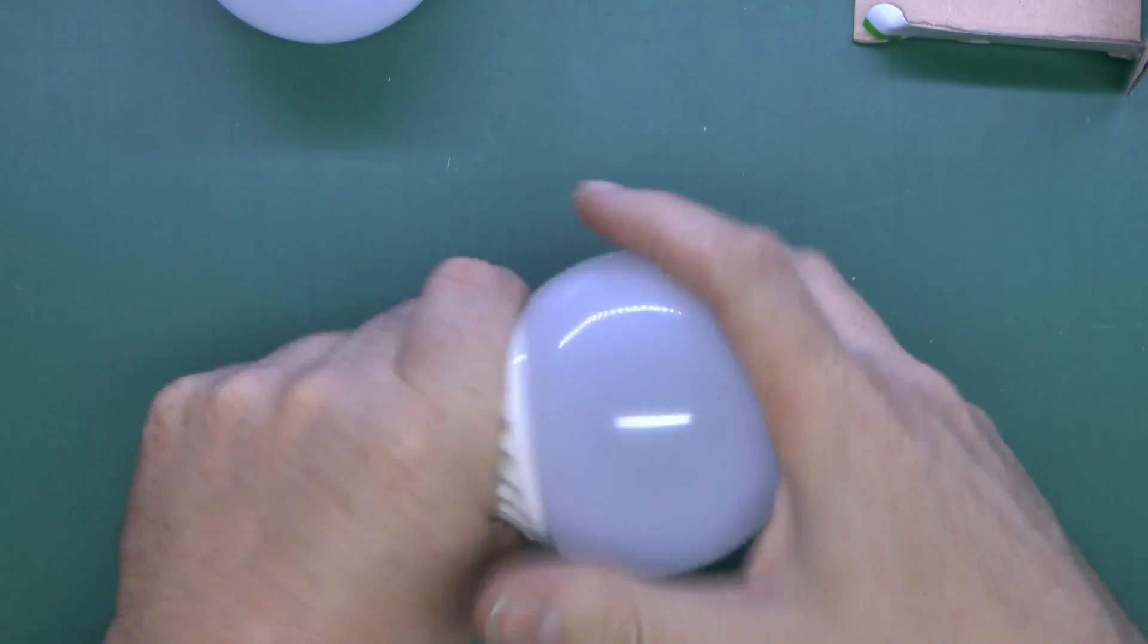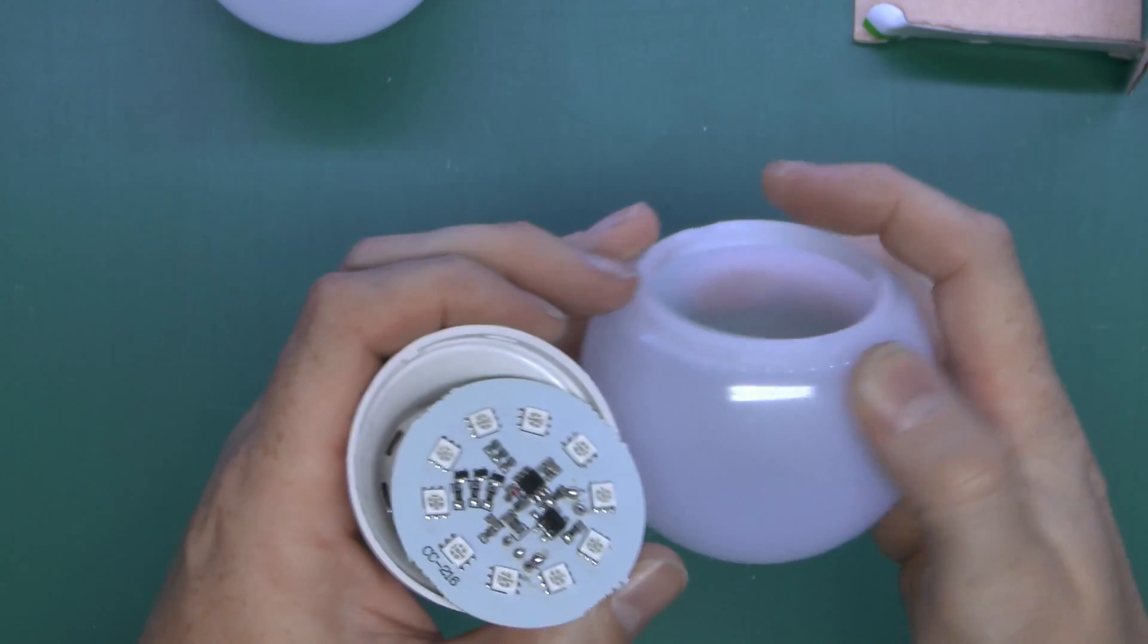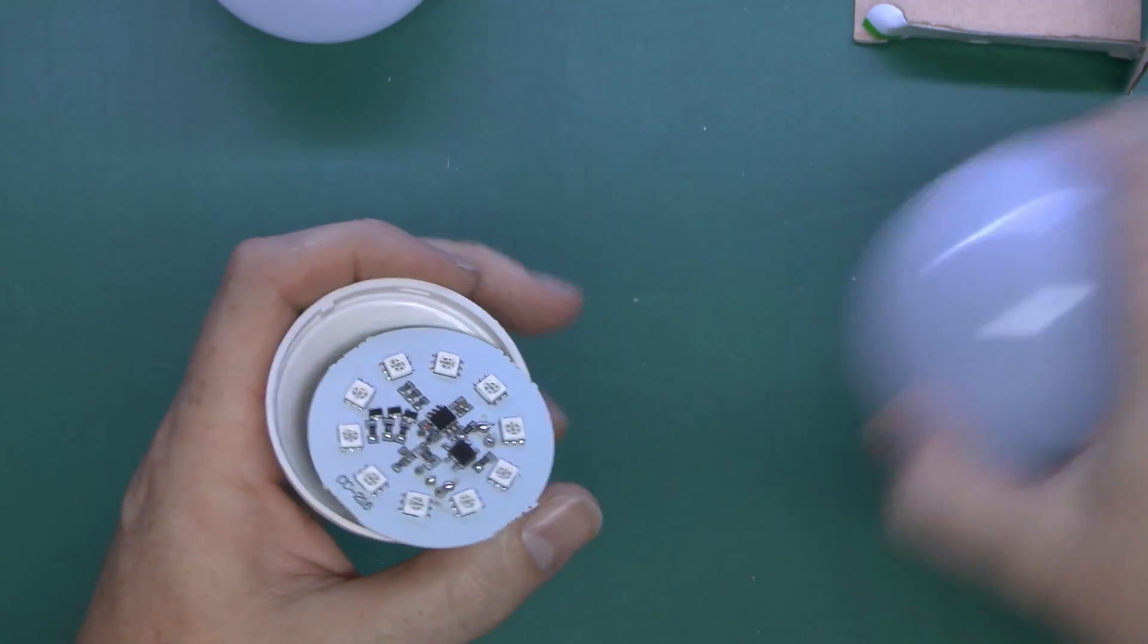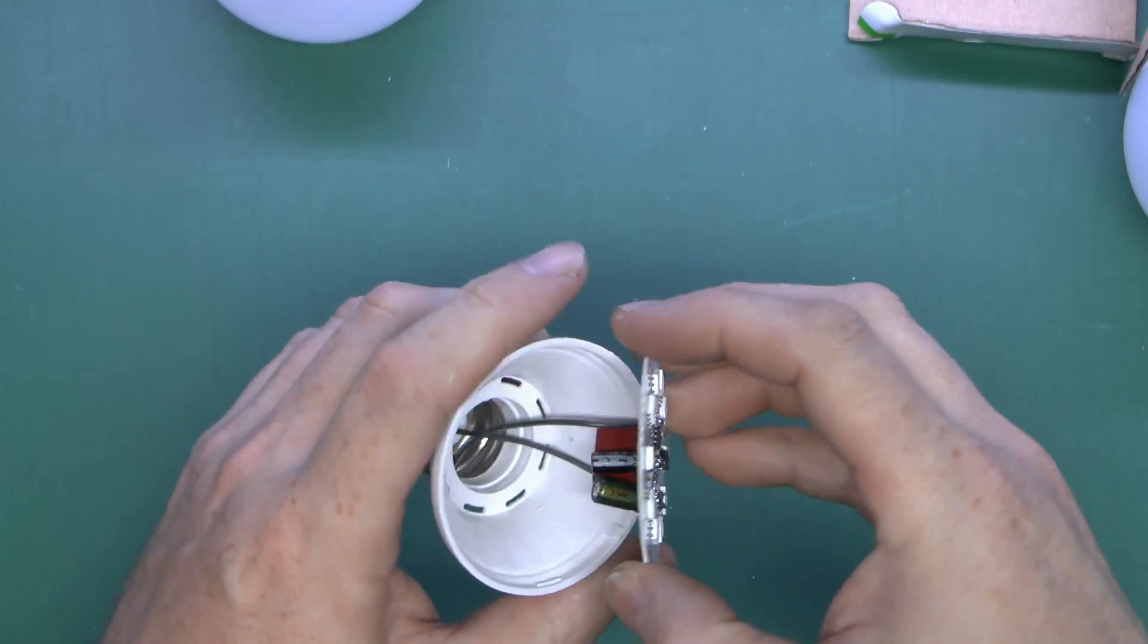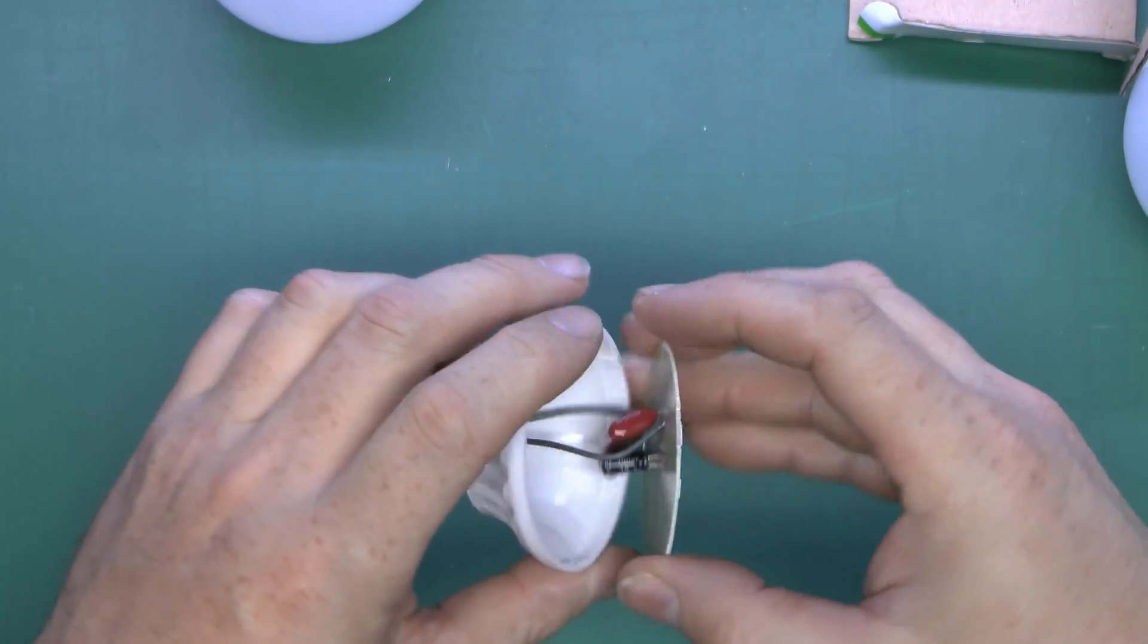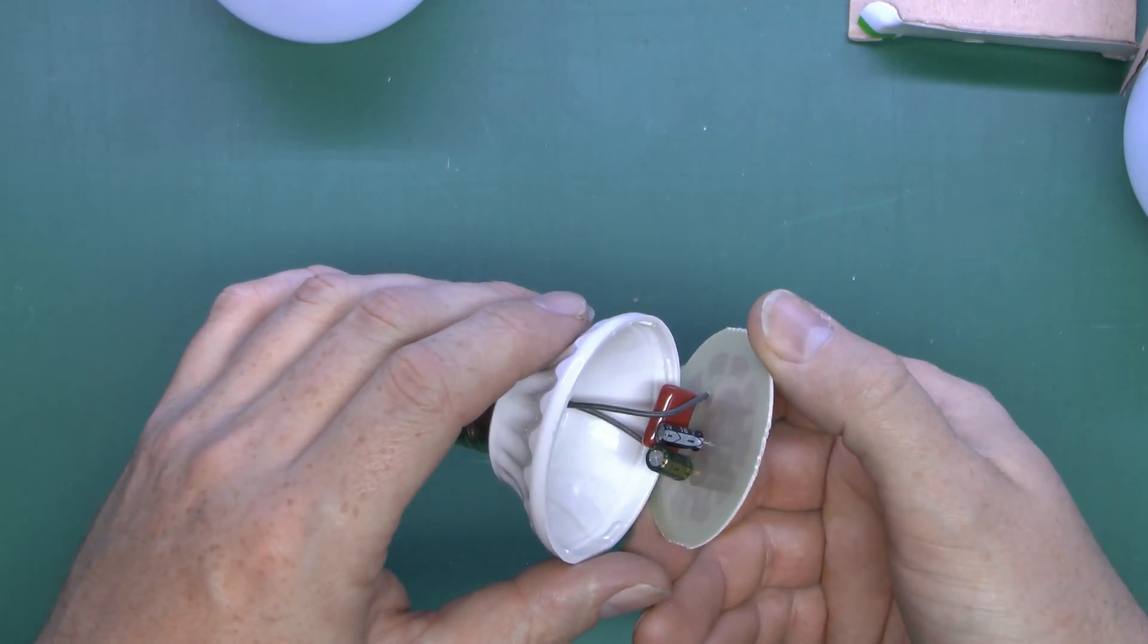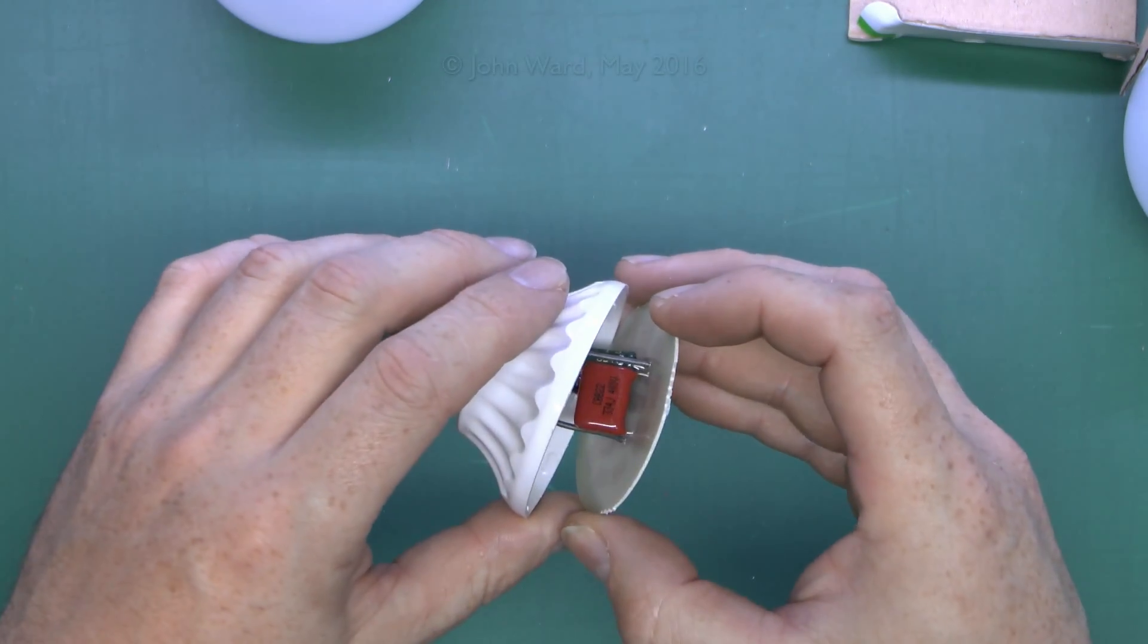Well they certainly don't unscrew. Right, the lid just clips in there. Plastic. Inside we've got this single circuit board. What's on the back there? Just a capacitor and a couple of electrolytics. So capacitive dropper type of arrangement.